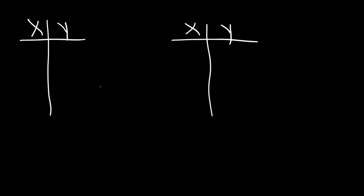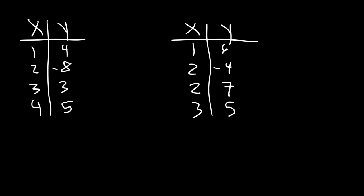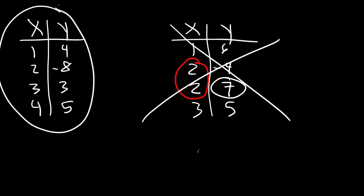Determine which of these two relations is a function — the table on the left or the table on the right. The table on the left has no repeated x values. On the right, when x is 2, y is negative 4 in one case, and y is 7 in another. This is not a function. A single x value has to correspond to one y value, so the left table is a function.